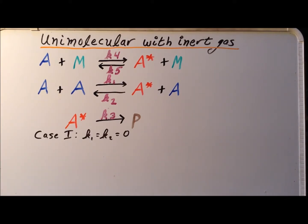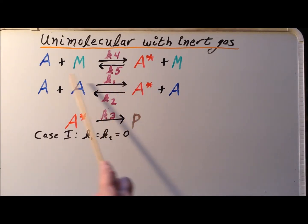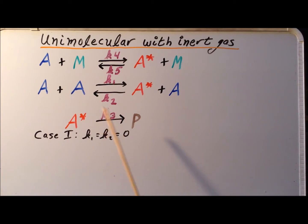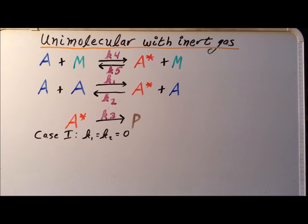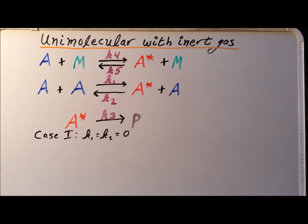We will now proceed to derive certain expressions for the rate of reaction. Note that the numbering system here is somewhat non-standard, so that we can keep the expressions already derived for the simple case with no inert gas and easily compare them with the new results with the inert gas. The first case we will examine, case one, is where we define the rate constants K1 and K2 to be identically zero — meaning this reaction does not occur at all, or occurs with such low frequency we can ignore it. Effectively, the only way to convert the reactive molecule A into the activated complex A star is collision with the inert gas molecule.